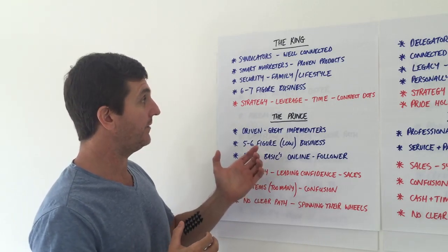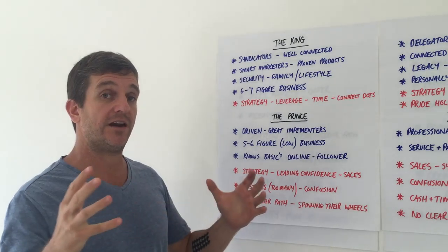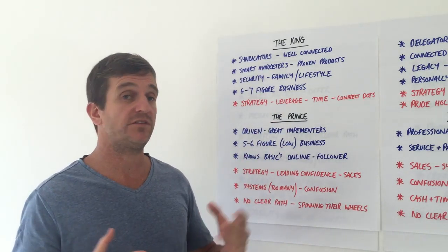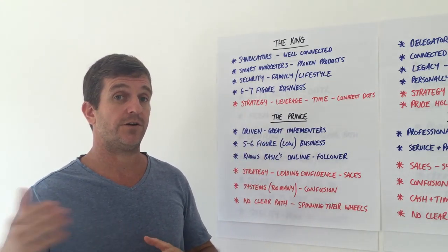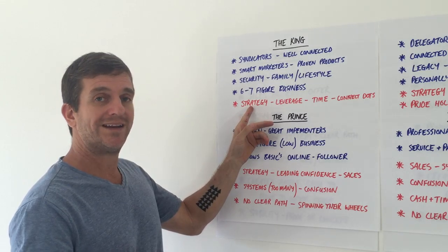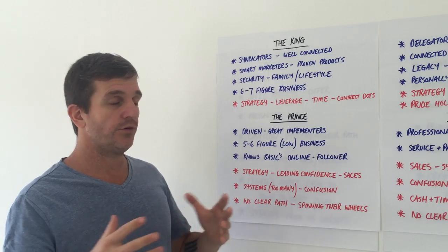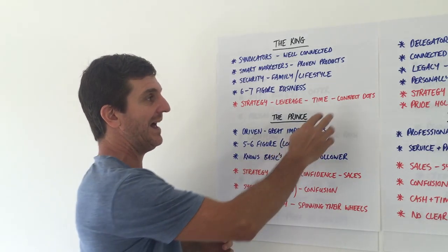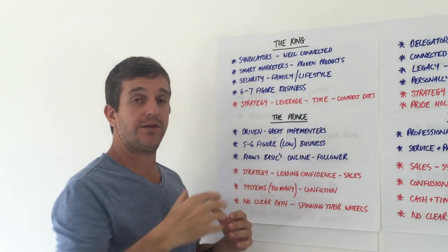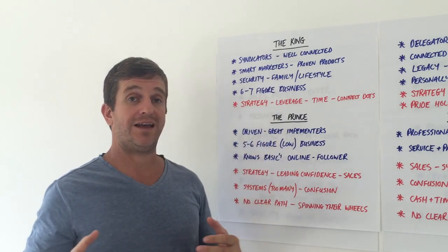They don't operate from trying to create their first product or for some sort of legacy. They're operating from security - they're after the money, big monetary gains, and family and lifestyle is key. They run a six or seven figure business, normally into the high six figures already if not into the seven. But where they break down is under strategy. They have connections and proven products but are unable to connect the dots.